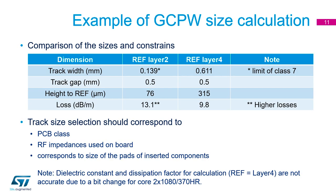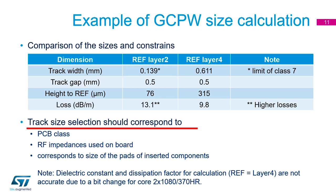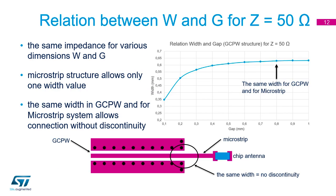Summarizing these results in a table: although the impedances are almost the same, the widths are different. From the perspective of manufacturability, the width in the first case is on the limit of class 7, which is more expensive than the second case where class 3 is sufficient. The loss of the RF track is higher in the first case compared to the second, but this is marginal due to the very short line for most STM32 WB applications. The key point is to consider PCB class and choose a suitable stackup for all impedances used on the board. It is also advisable to use track widths matching the pad sizes of inserted components, so the RF path has minimal discontinuities.